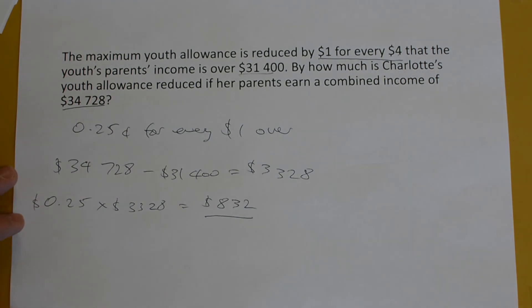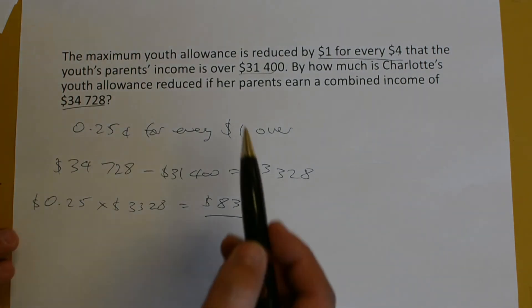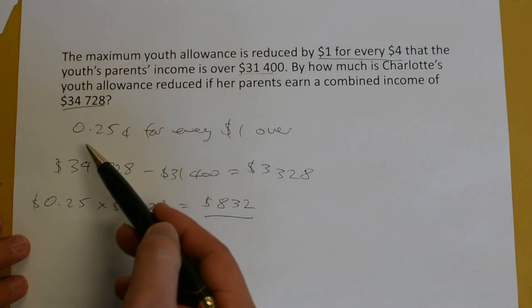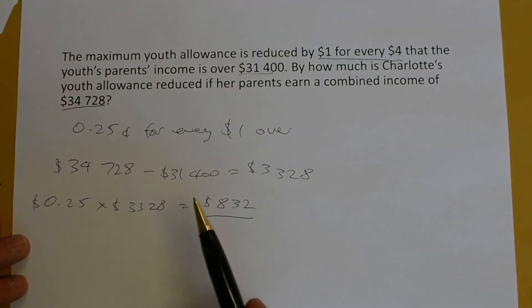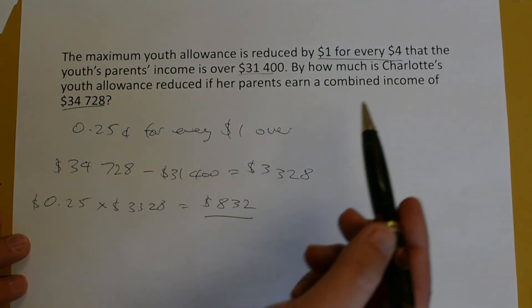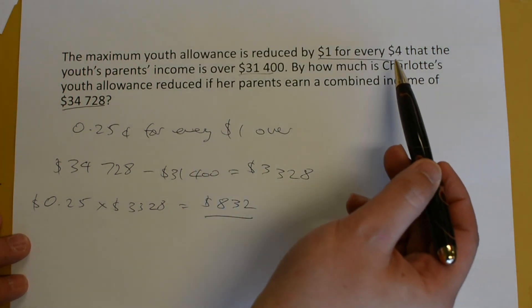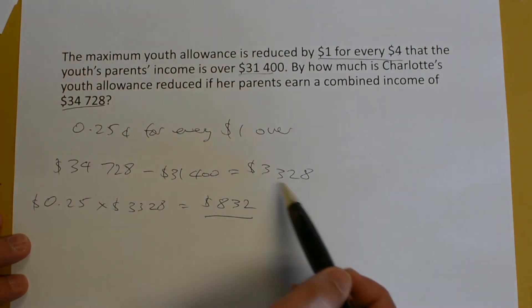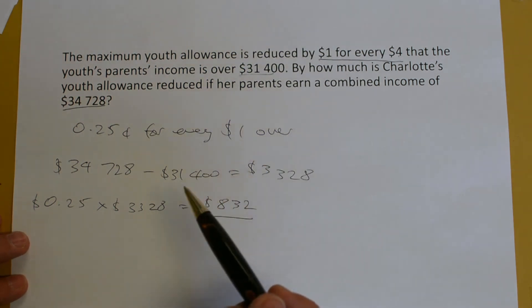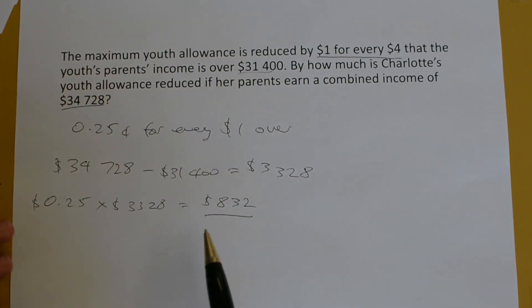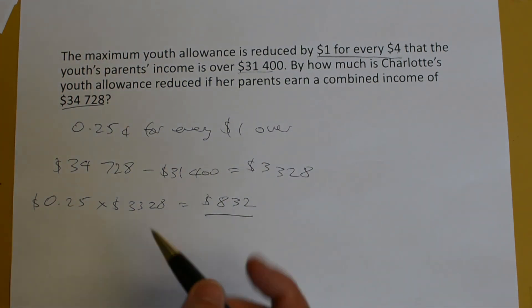So $832 is how much the allowance would be reduced by. If you didn't convert to every $1.00 over, you could instead divide $3,328 by 4, which gives you the same answer of $832.